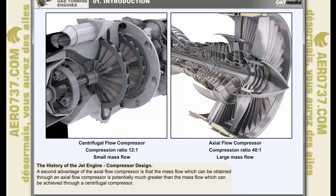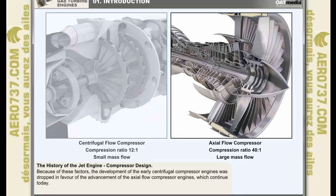A second advantage of the axial flow compressor, almost as important as the first, is that the mass flow which can be obtained through an axial flow compressor is potentially much greater than the mass flow which can be achieved through a centrifugal compressor. As a consequence of these factors, the development of the early centrifugal compressor engines was subjugated in favor of the advancement of the axial flow compressor engines, which continues today.